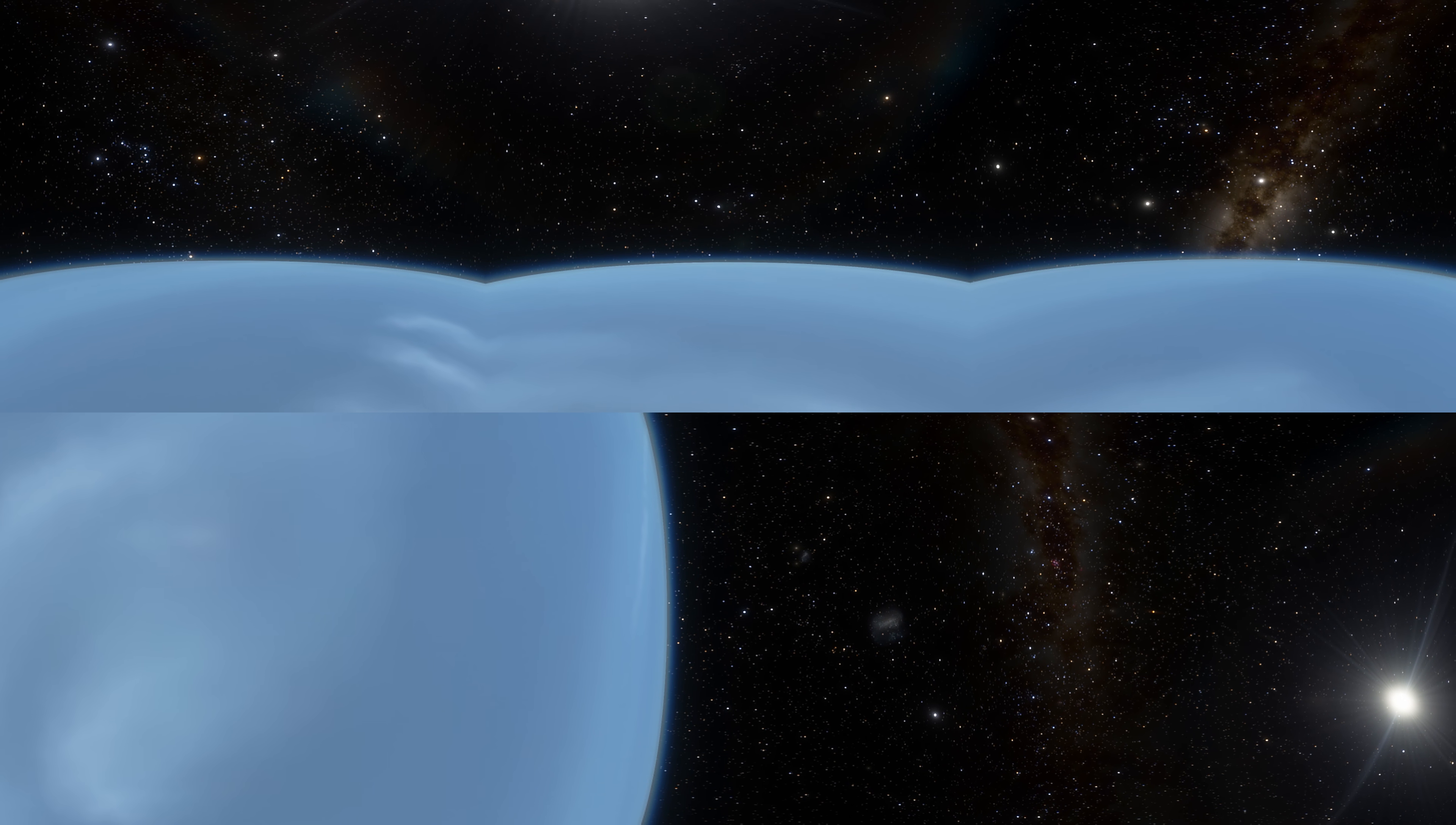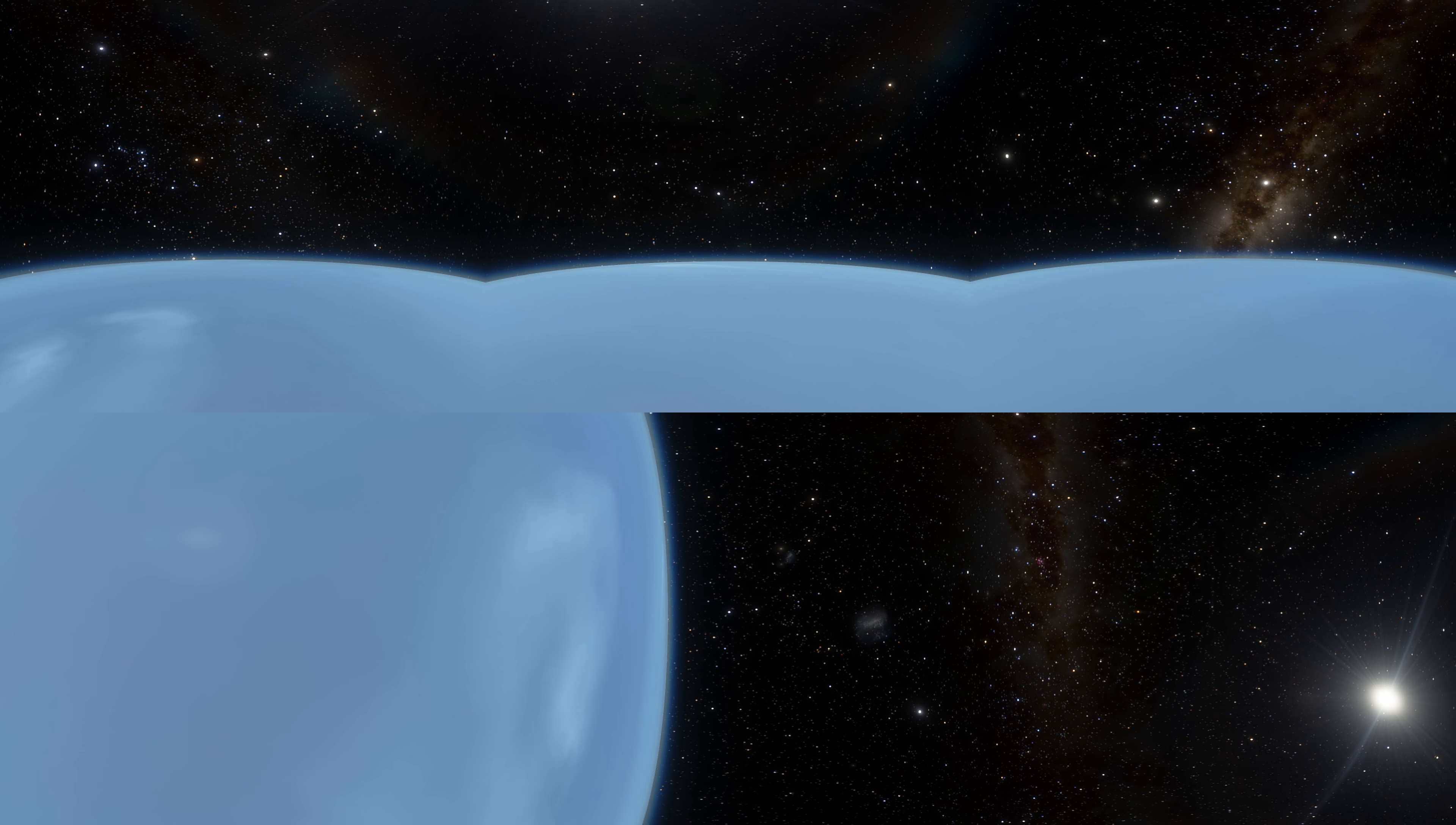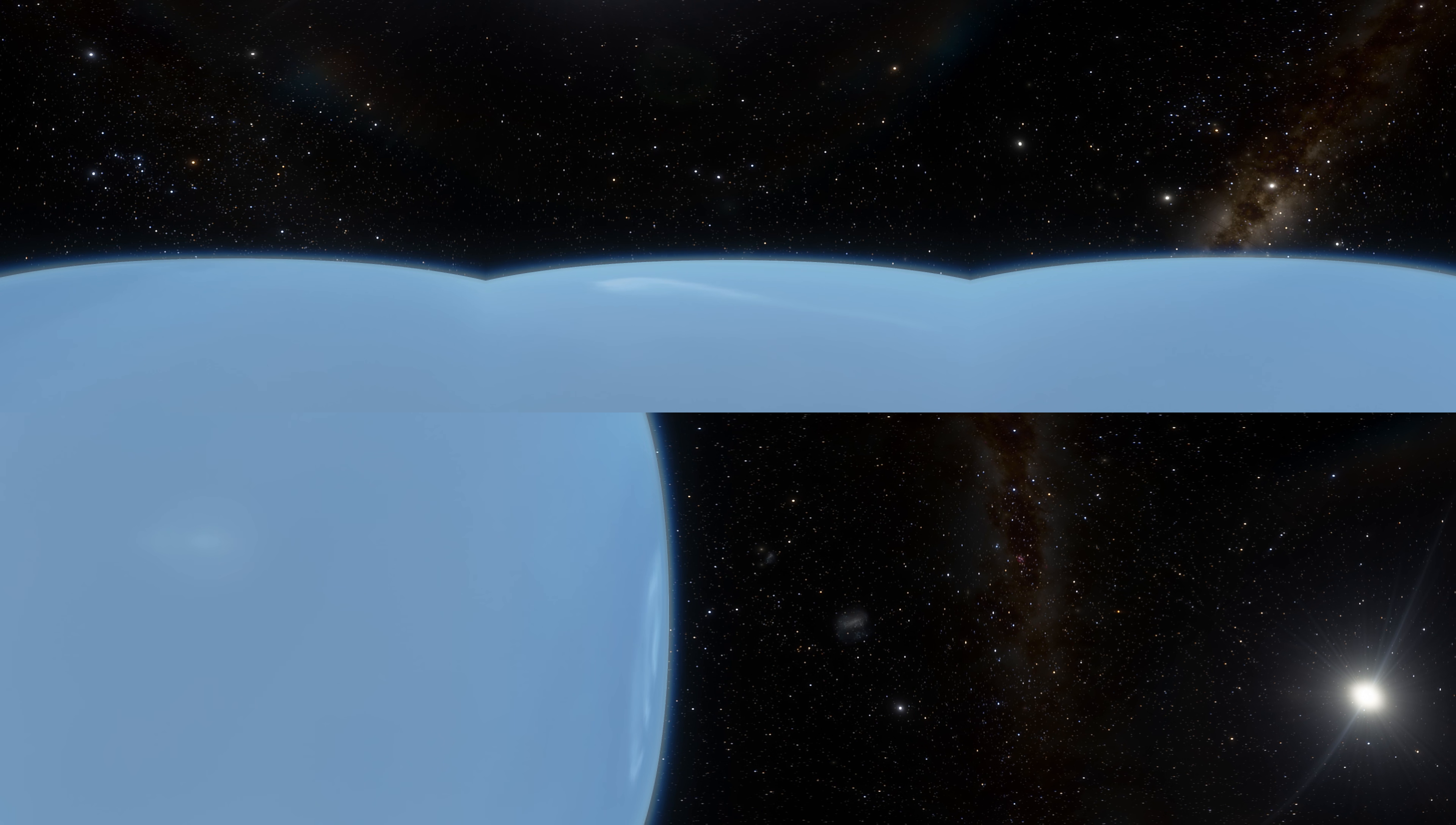But Neptune, on the other hand, is only about four times the size of the Earth. So viewing it from about 100 kilometers is roughly equivalent to your view out of an airplane window at 10,000 feet. There might be some possibility to see some curvature here, but we've only had one spacecraft ever visit Neptune on a flyby, and so we don't have amazingly detailed images of its surface.